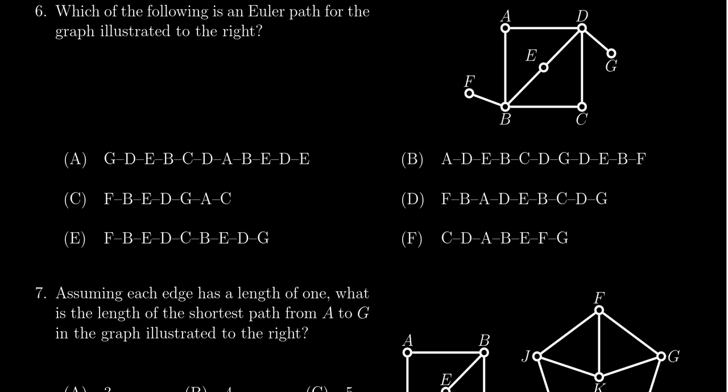We could go through all of these paths one by one, but for Euler paths there's one very nice thing that can rule out a lot of possibilities: the path has to start at odd vertices. Notice that G and F both have degree one, so they're odd vertices. Everyone else has degree two, four, two, four, and two. So any Euler path has to start at F or G.